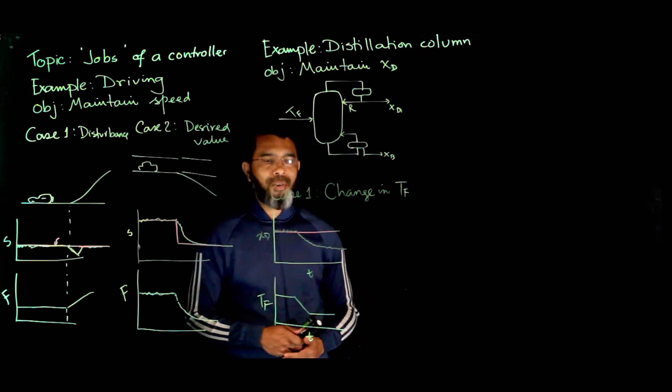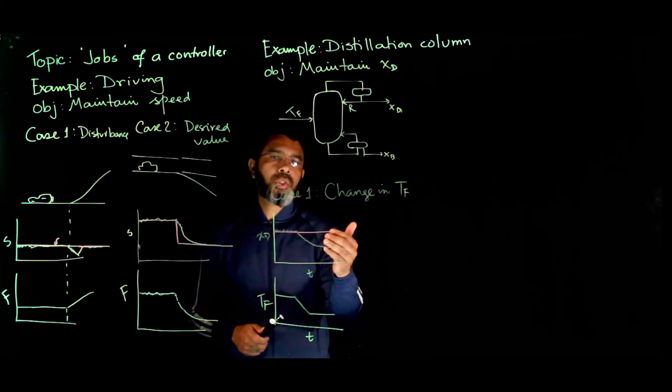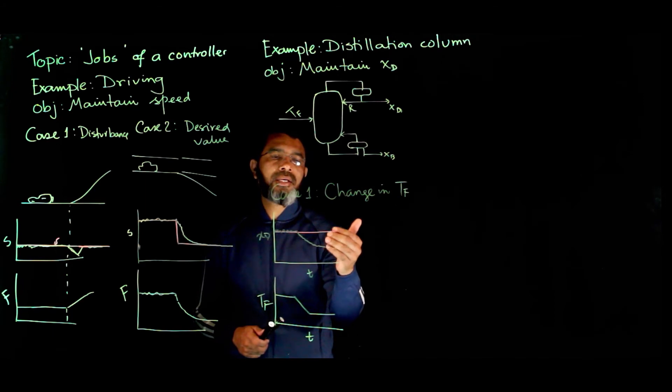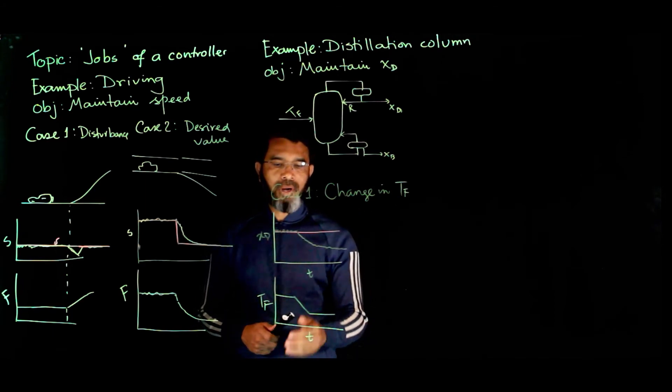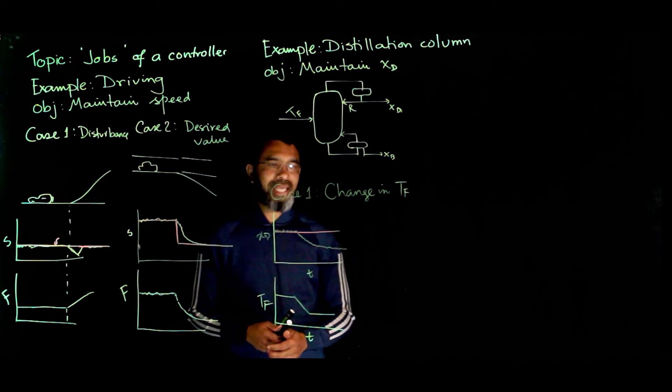The job of the control will be to keep the XD to follow the set point in the presence of that disturbance. So that is Case 1.